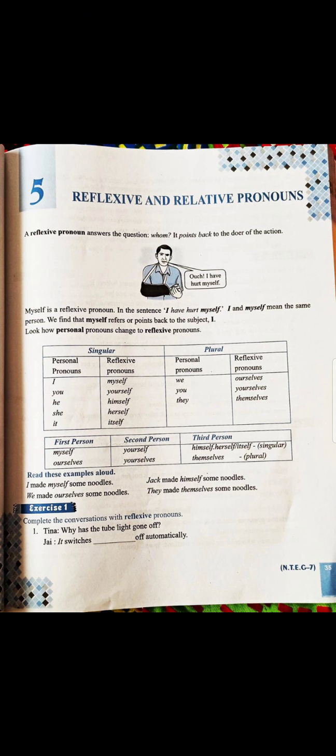Here, some personal pronouns are there like I, you, he, she, it. In singular, when we have to make their reflexive pronoun, it should be for I, we will say myself. For you, we will use yourself. For he, himself. For she, herself. For it, itself.